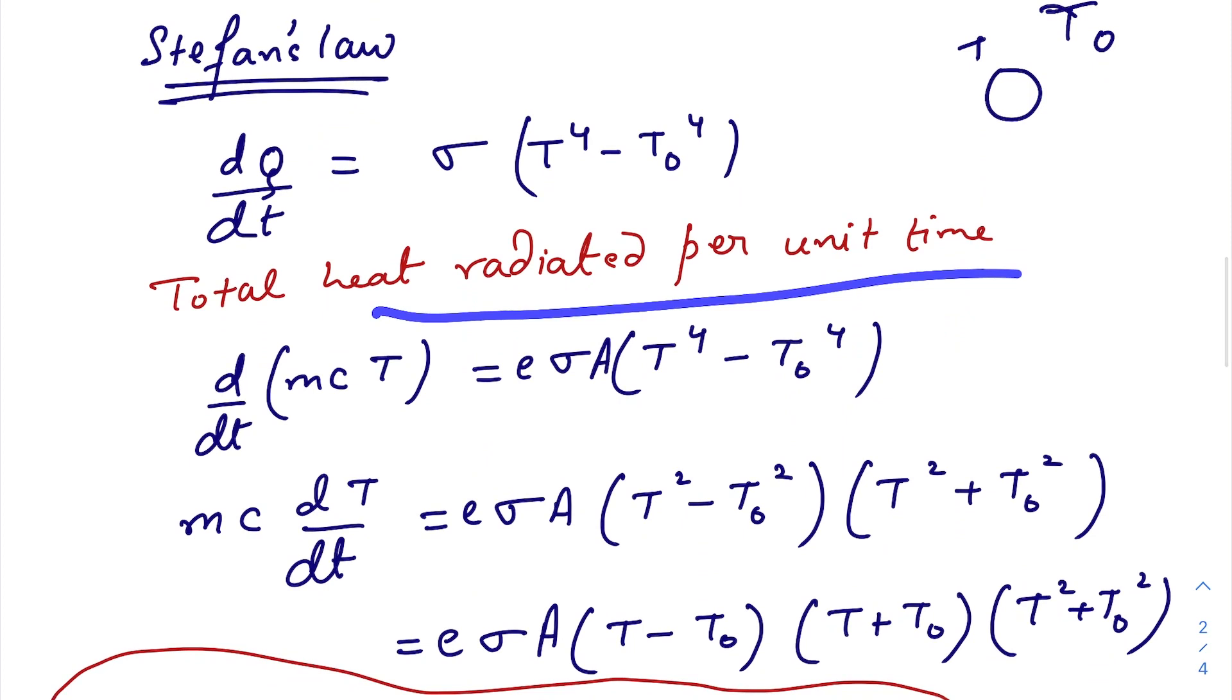The total heat radiated per unit time by a body of mass M having a specific heat capacity of C and at any instant the temperature is T. So, d/dt of MCT equals to E sigma A T to the power 4 minus T0 to the power 4.